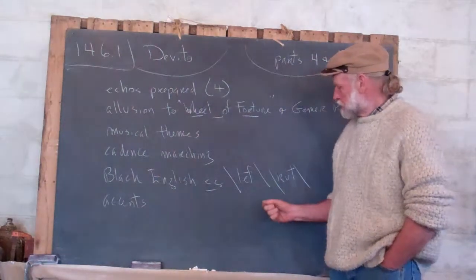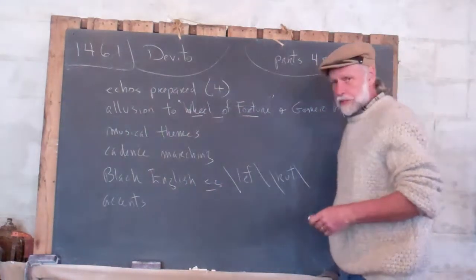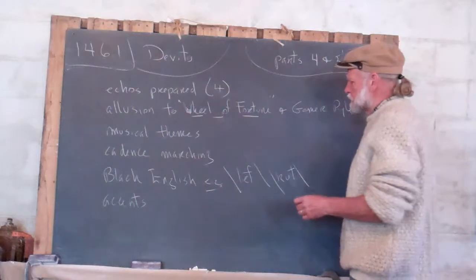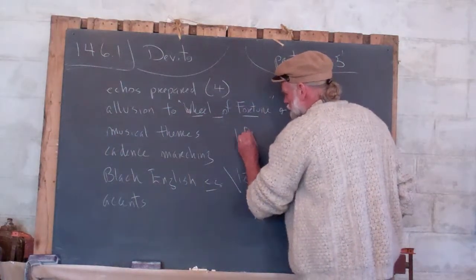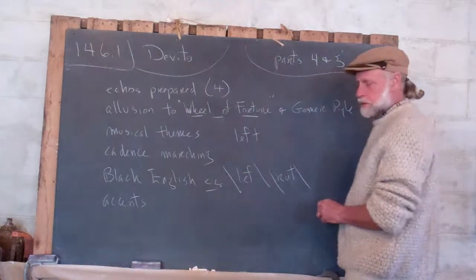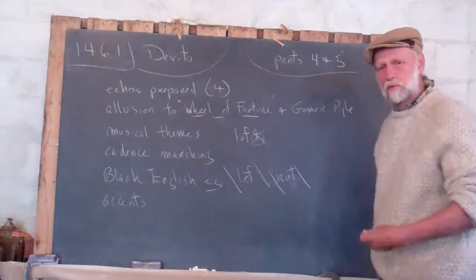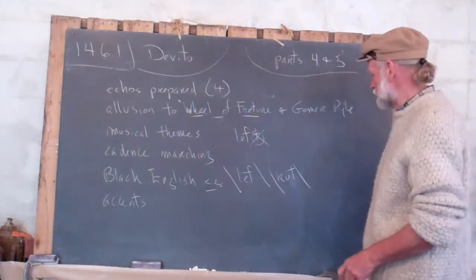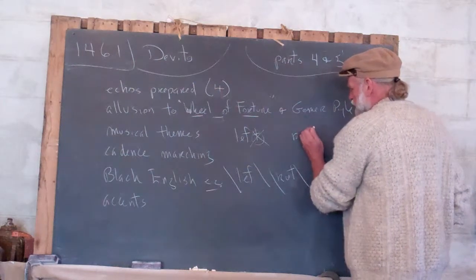I'm just obeying a rule in Black English, which I might have told you about already, I'm not sure, that if a word ends with two consonants, the second one is omitted. It's one of the rules of Black English, that's pretty standard. And the same thing actually happens with vowels.